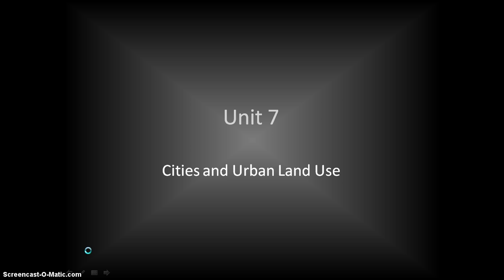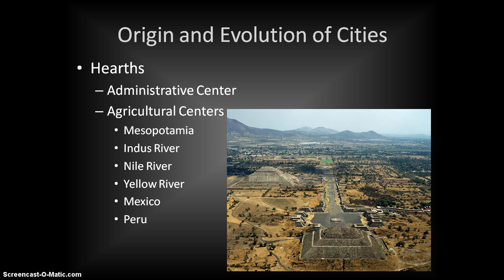Hello everyone and welcome to another session of AP Human Geography with Mr. Elrod. Today we're going to continue in unit 7 discussing cities and urban land use. Last time we were talking about how to define what it means to be urban, and today we're going to be looking at the origin and evolution of cities — their original purposes and how that changes over time.